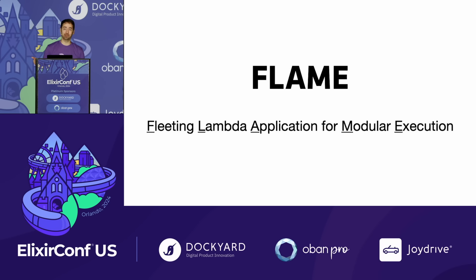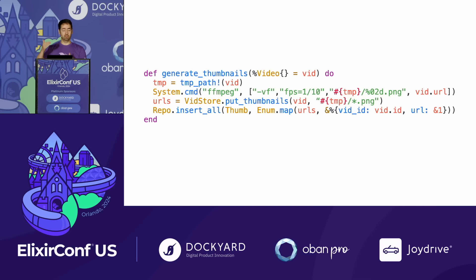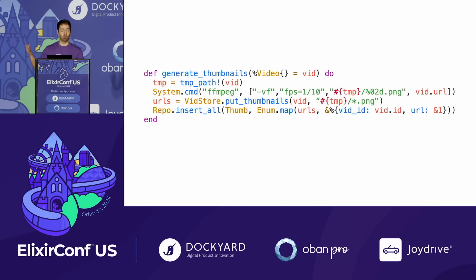FLAME is what gives us elastic scale in Elixir. It stands for Fleeting Lambda Application for Modular Execution. We wanted to co-opt this idea of a lambda — you have Lambda Cloud for workers, all these proprietary services that allow you to run code elastically if you buy into 12 layers of proprietary services. What if you could just use your application like a lambda, run it ephemerally, and ditch those proprietary services? The naive alternative is code that ends up CPU-bound in your web request or LiveView serving your UI.